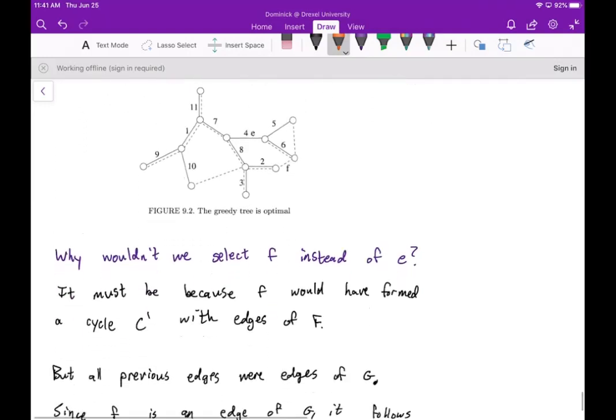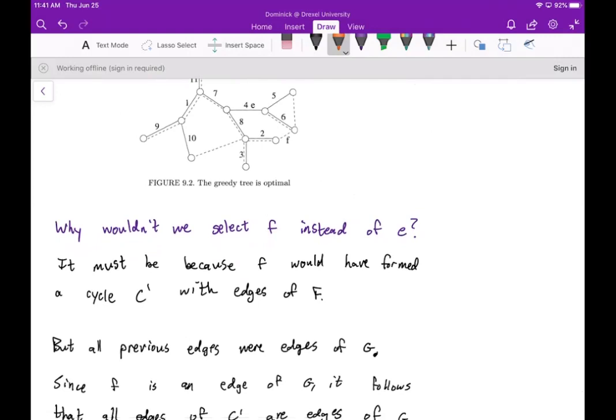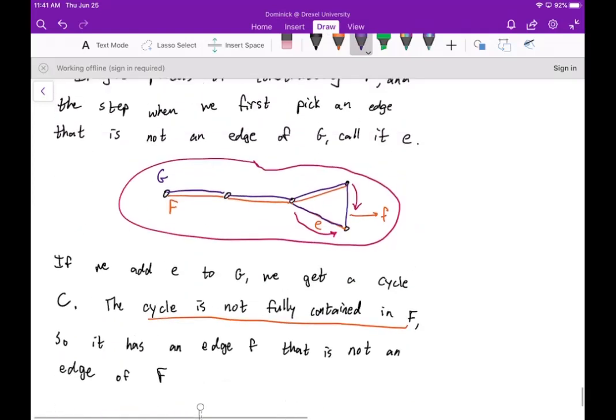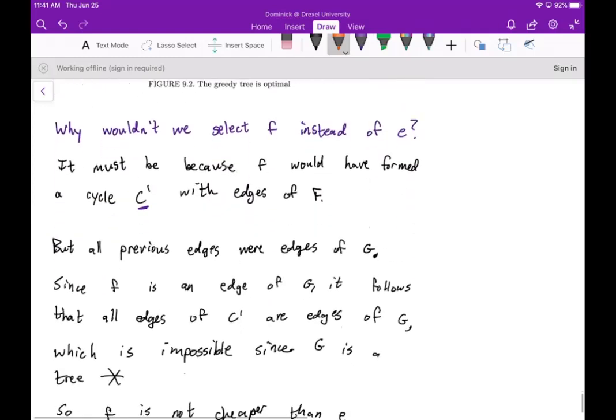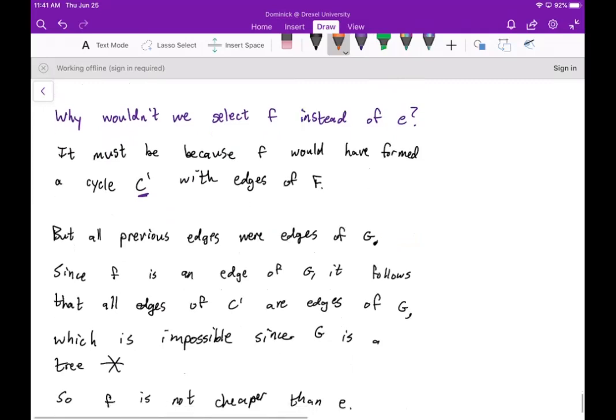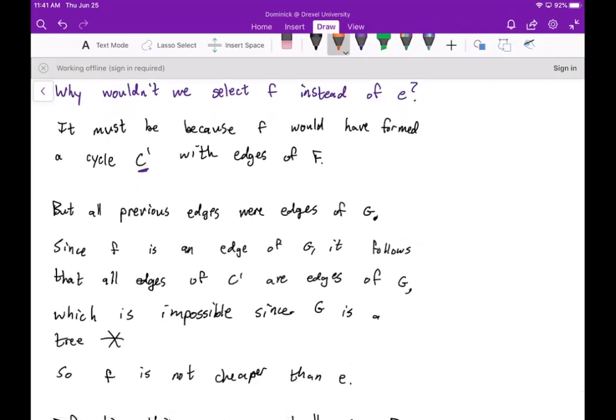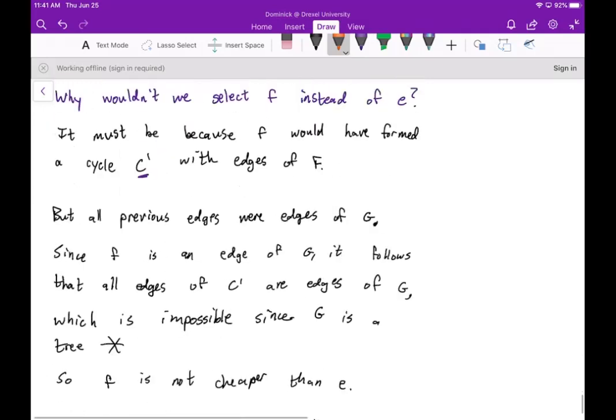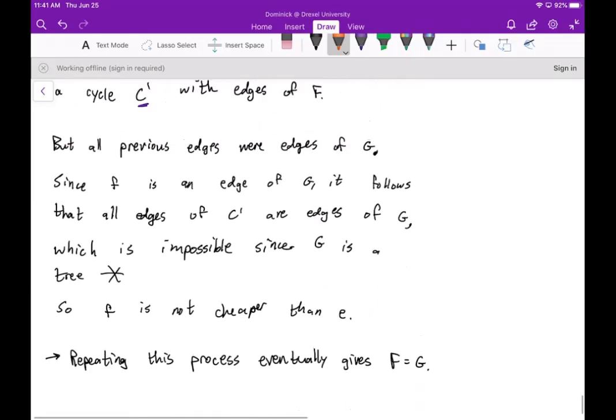Now why wouldn't we select f instead of e? Well it must be because f would have formed a cycle C prime with the edges of F. And of course it would have, right? Because if we go back to the original drawing, if you were to add this in to the orange, then you'd have this little triangle cycle here. But all the previous edges were edges of G. Now since f is an edge of G, it follows that all edges of C prime are edges of G. And of course this is impossible because G is a tree.